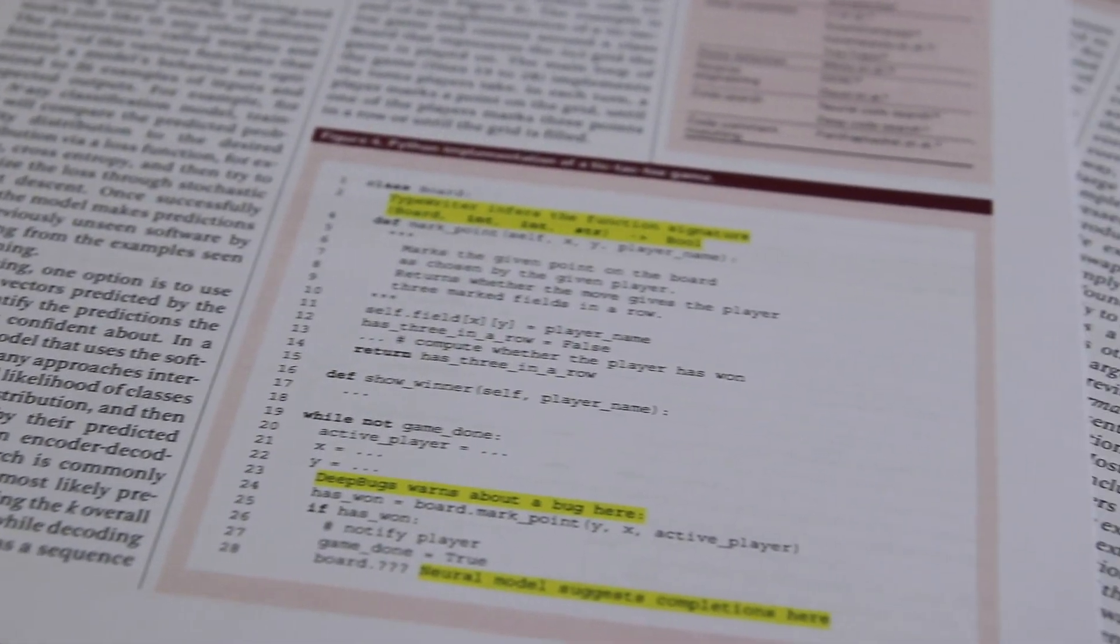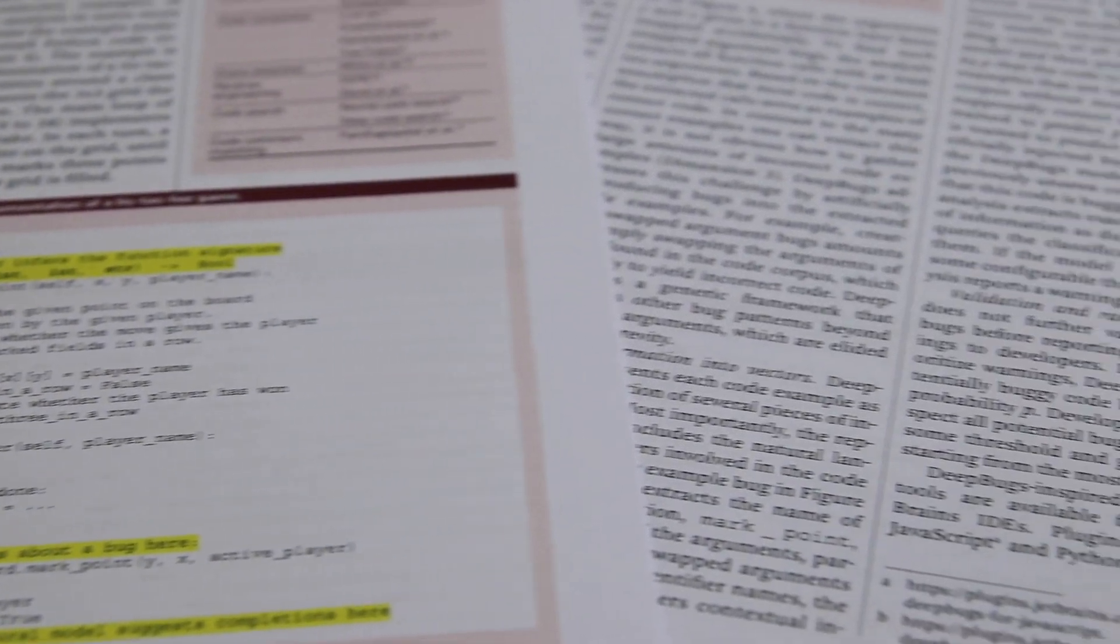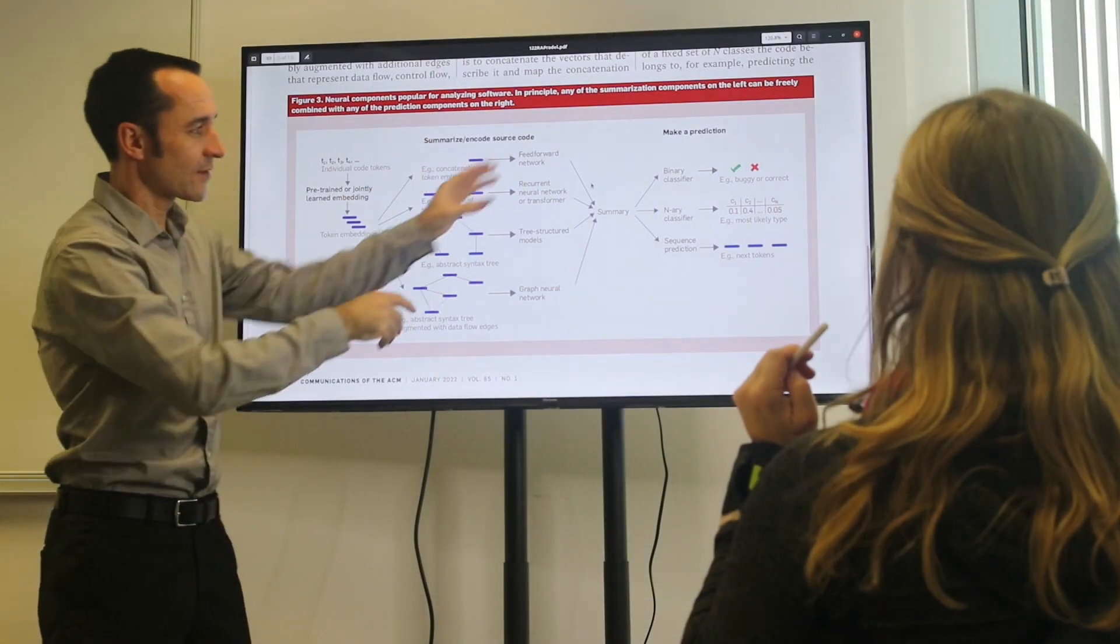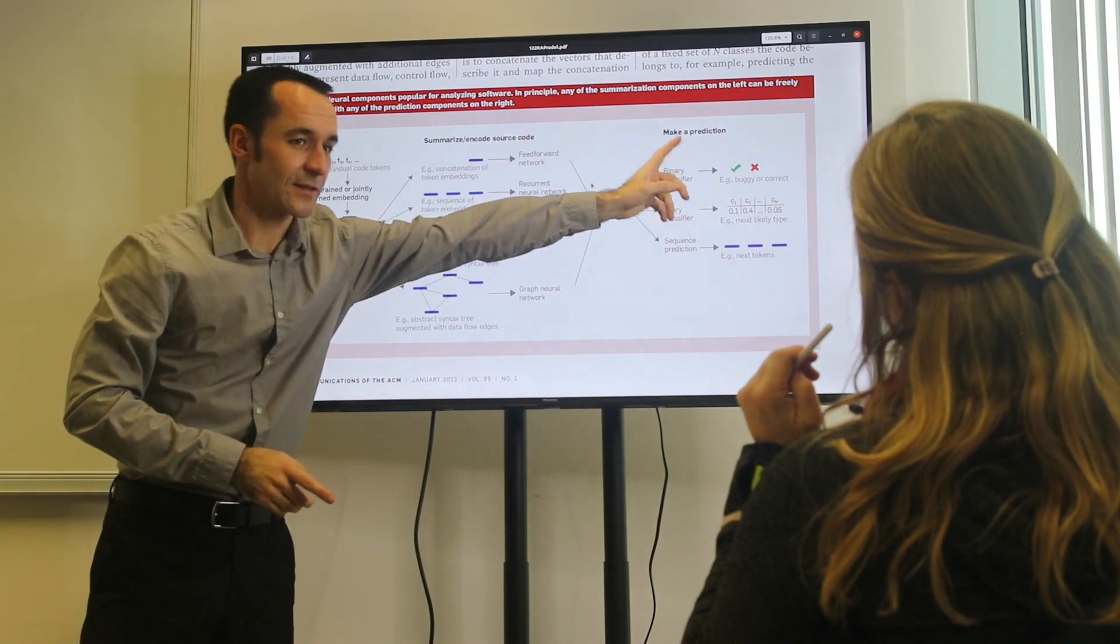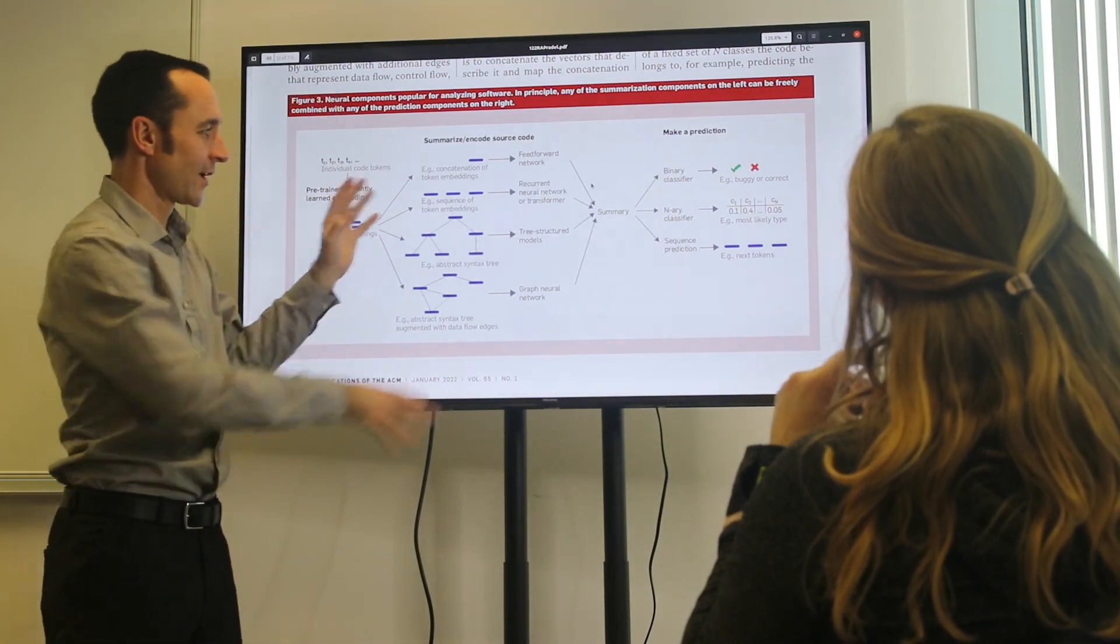One analysis finds bugs by learning from the identifier names that developers are using. Another analysis learns how to predict types for dynamically typed languages such as Python, which is incredibly useful to annotate an already existing code base. Yet another analysis is about predicting code while developers are writing this code.